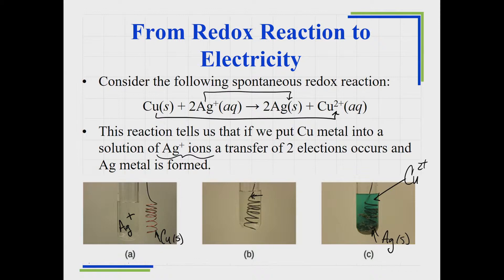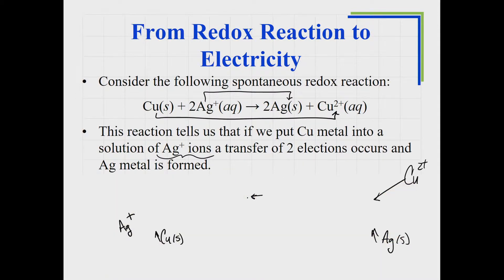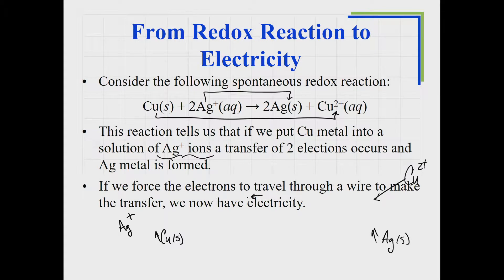When the copper and silver solution are in direct contact, the electrons are transferring right there at the interface as the reaction takes place. You cannot get any electricity out of that because in order to have electricity you need the flow of electrons, and there's no flow — they're just transferring right there at the interface.